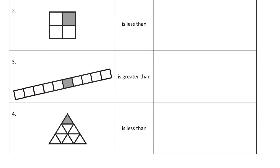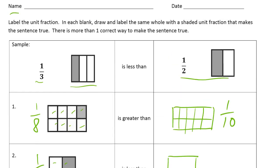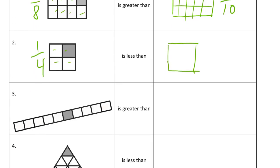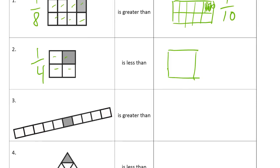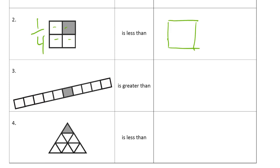And now here we have a piece that's one, two, three, fourths, right? So it's one-fourth is less than, so we need something now that's bigger than a fourth. And we need the same size whole, so I'm going to draw a square that's about the same. Did it say we had to draw and label the same whole with a shaded unit fraction that makes the sentence true? So these have to be unit fractions that we're shading and drawing.